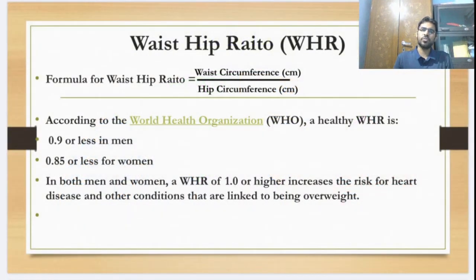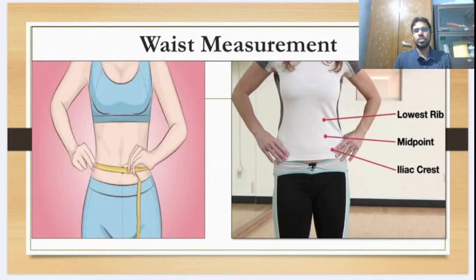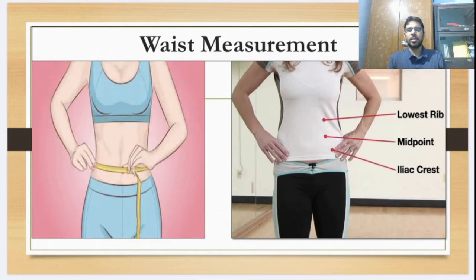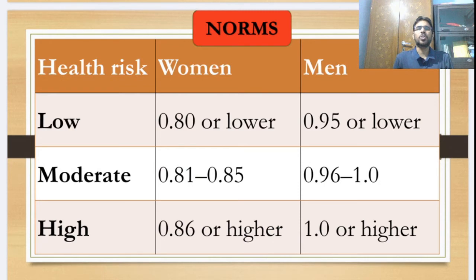The second method is Waist-Hip Ratio, which is calculated as waist circumference divided by hip circumference. You can measure your waist using a specific body landmark — your navel point, the iliac crest, and the midpoint between them — with the help of an inch tape. Put the measurements into the formula and calculate. The result will tell you, as per the norms, whether you are at low, moderate, or high risk in relation to overweight or obesity.